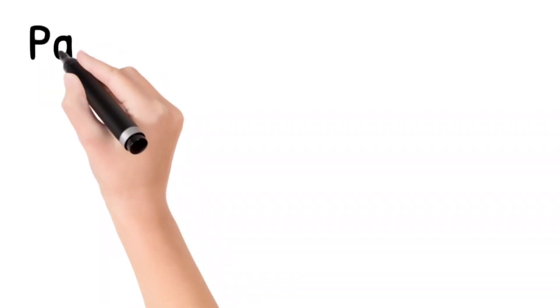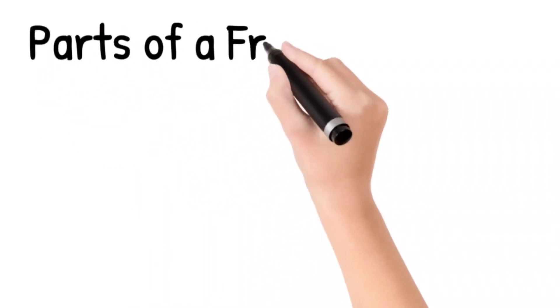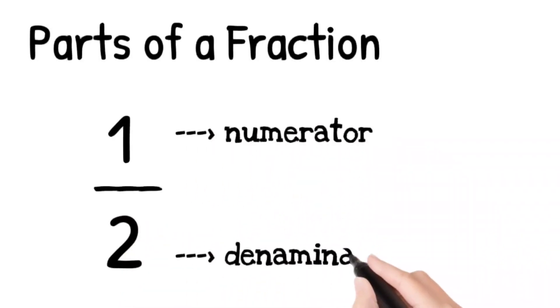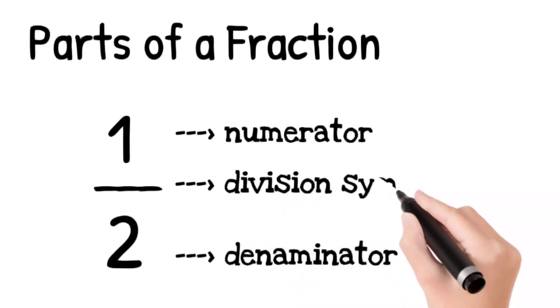Fractions have three parts. For example, one-half. The three parts are numerator, denominator, and division symbol.